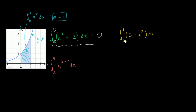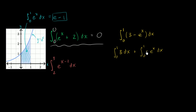Now let's think through this one. Here my bounds are different — they are the same as zero to one — so if I can break this up, especially if one part is in the form of e to the x, I might be able to evaluate it. I can break this up as the definite integral from zero to one of three dx, minus the definite integral from zero to one of e to the x dx.